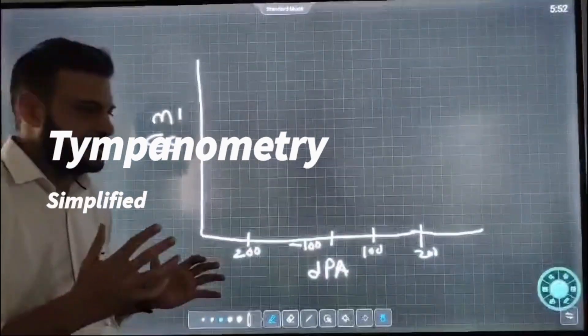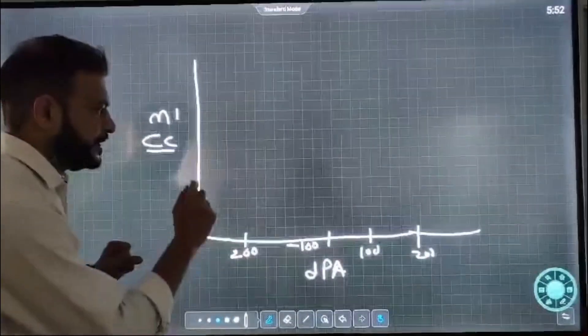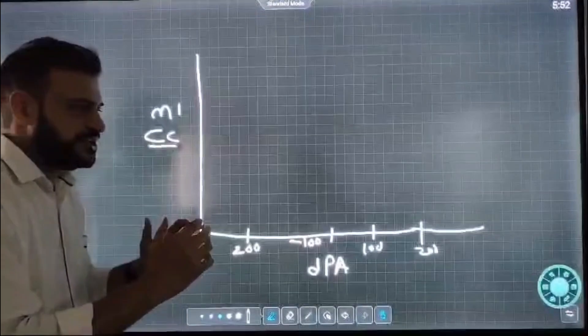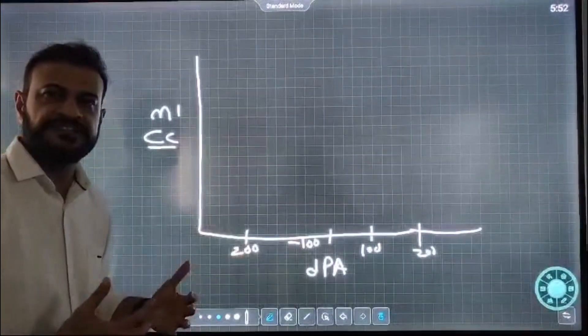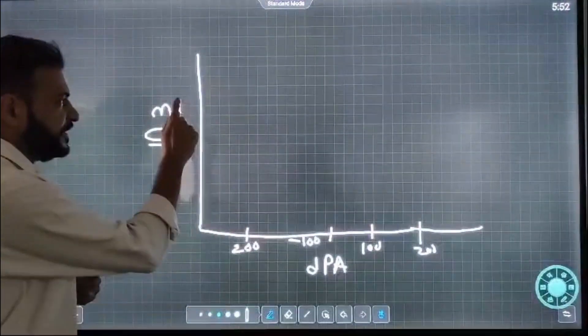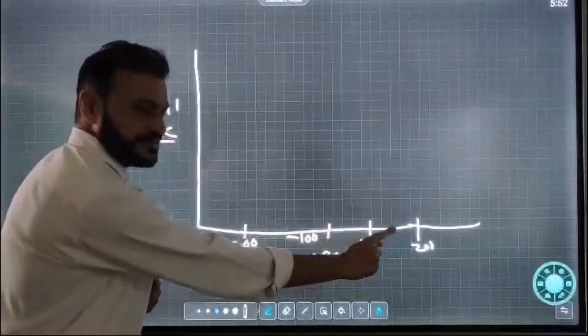Let us understand and simplify the reading of tympanograms. A tympanogram measures the compliance of the middle ear. When you see a tympanogram graph, you will see a Y-axis and an X-axis.